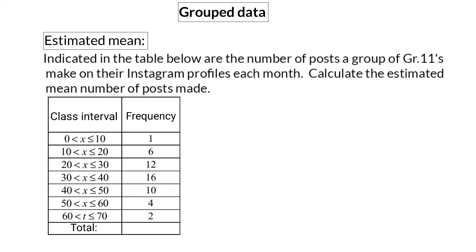Indicated in the table below are the number of posts a group of grade 11s make on their Instagram profiles each month. Calculate the estimated mean number of posts made. Here, instead of receiving the raw data we've received grouped data. The data has been organized into groups and each group or interval's frequency is given. It is important to know how many values we had in the original data — you add up all the frequencies and you will see that there were 51 values in the original raw data.